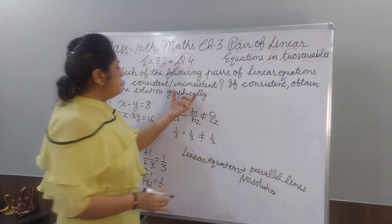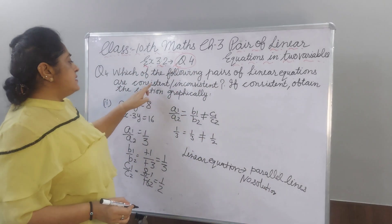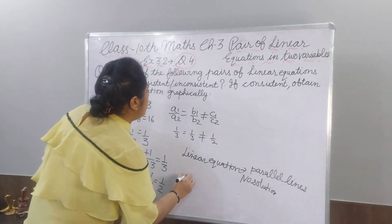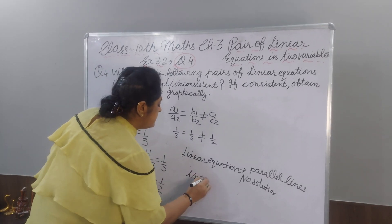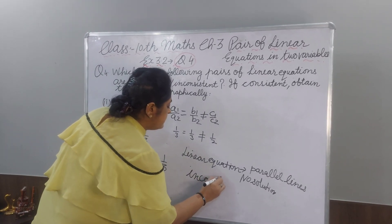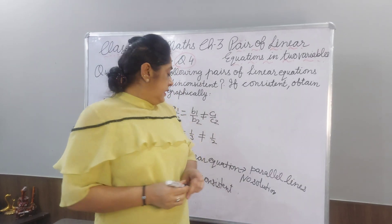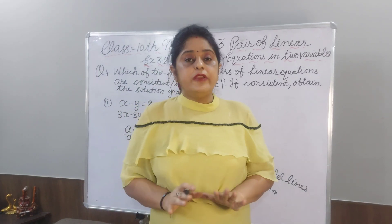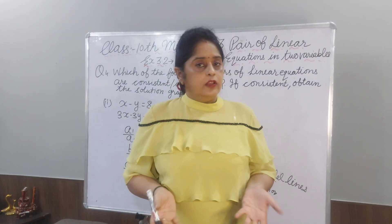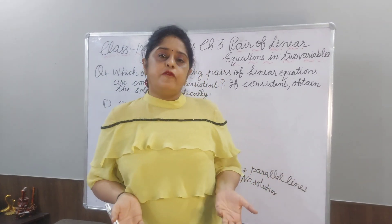If no solution, you have to tell they are consistent or inconsistent. So, means they are inconsistent. If these parallel lines are inconsistent, it means graphically you can't show it. We have to not make the graph of this.